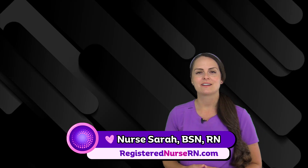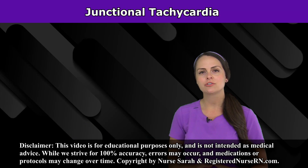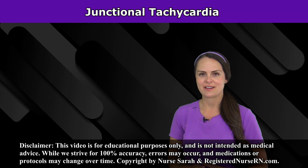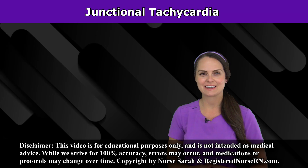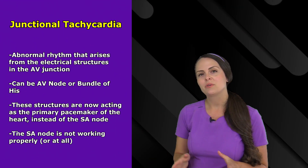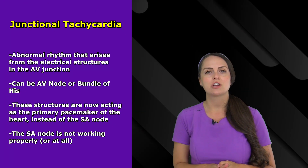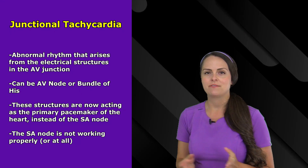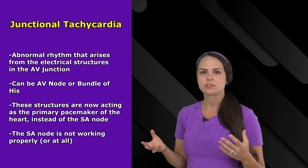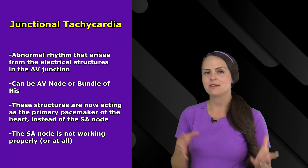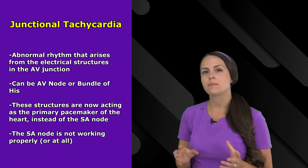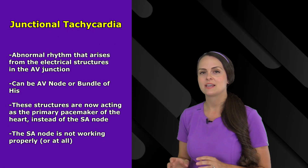Hey everyone, it's Nurse Sarah and in this video I'm going to go over junctional tachycardia. This is an abnormal rhythm that originates from the electrical structures in the AV junction — the AV node or the bundle of His.